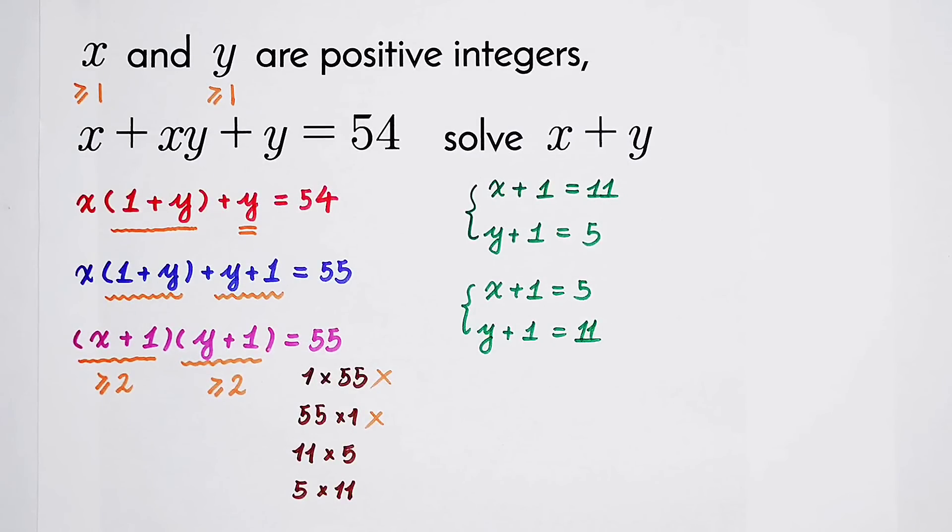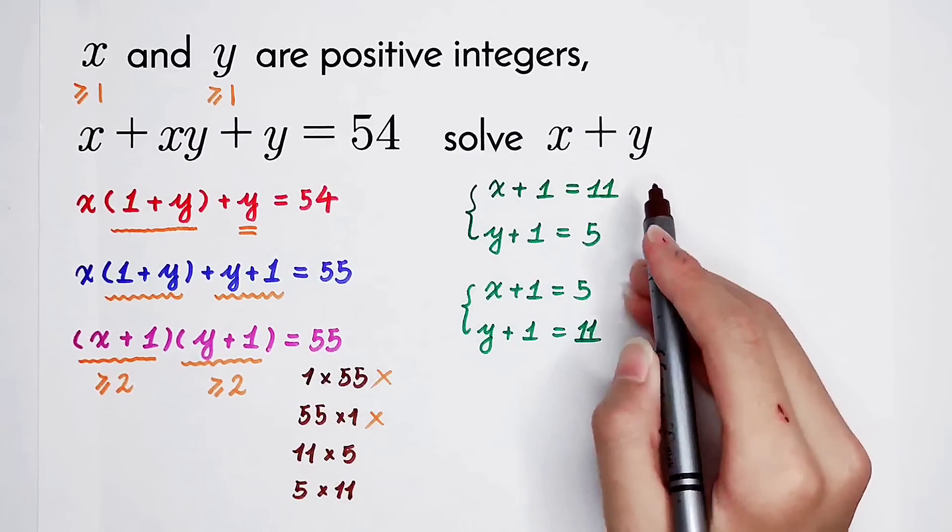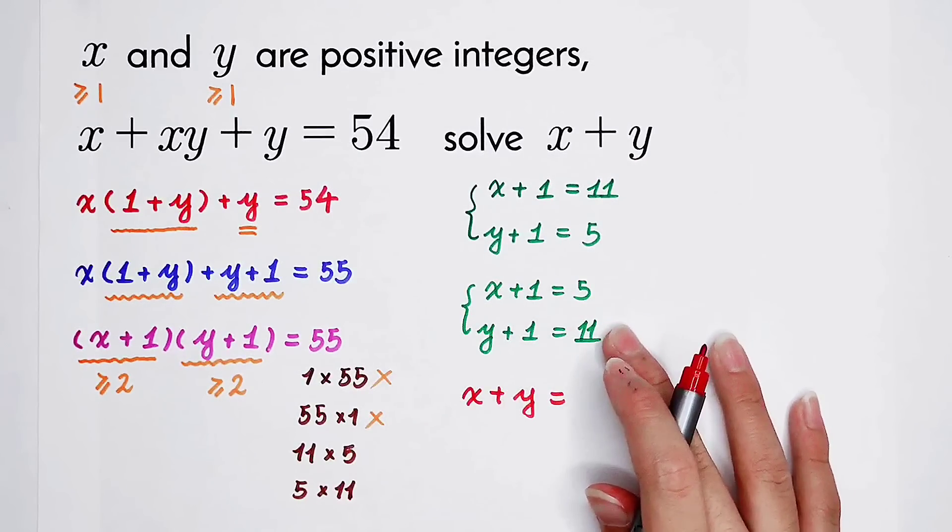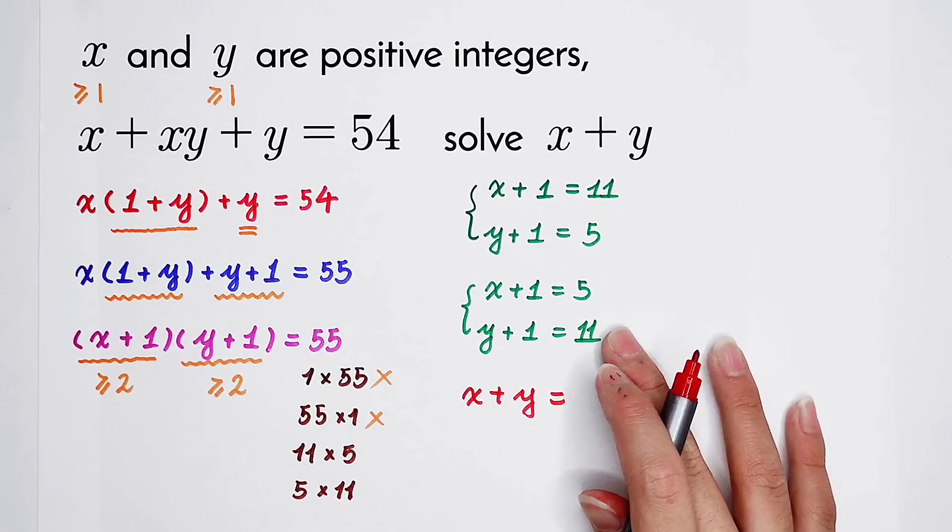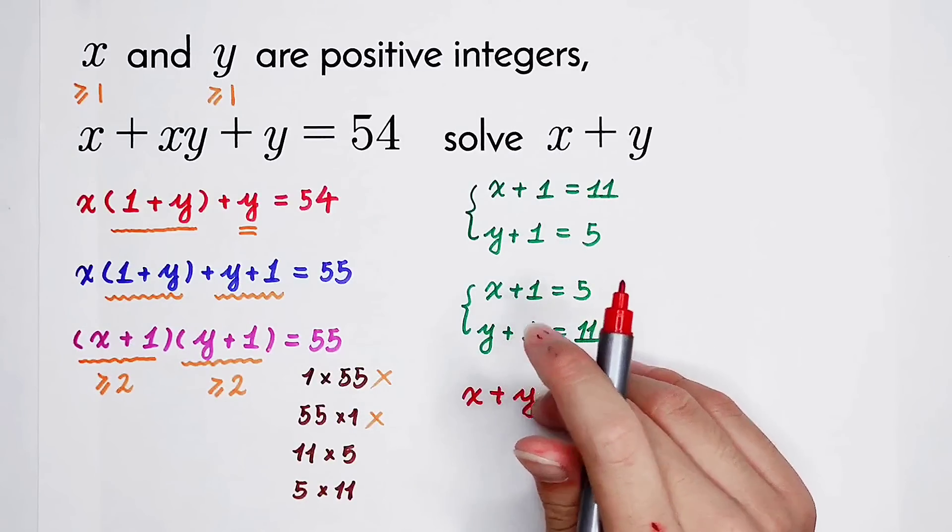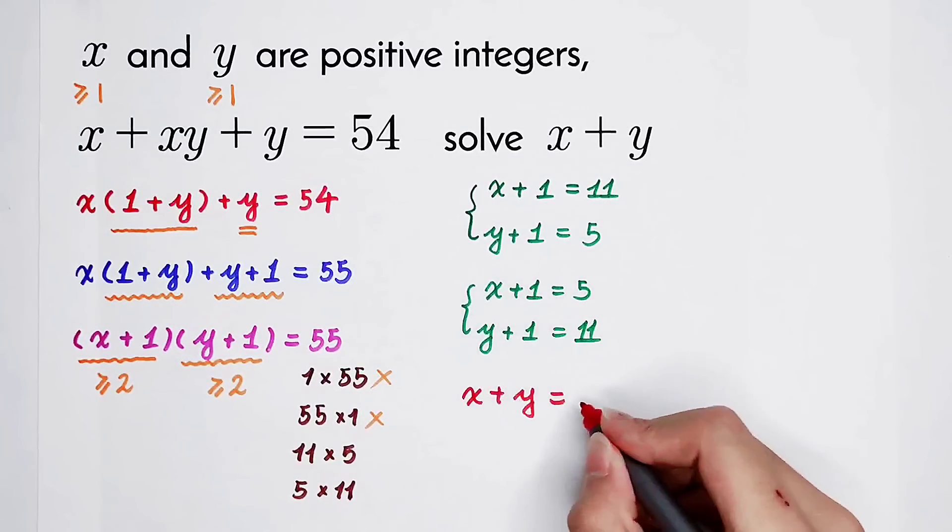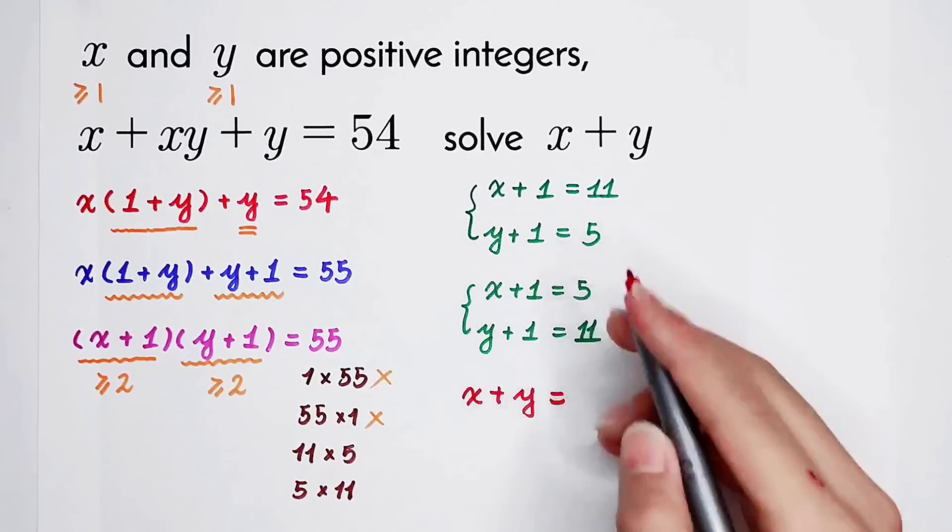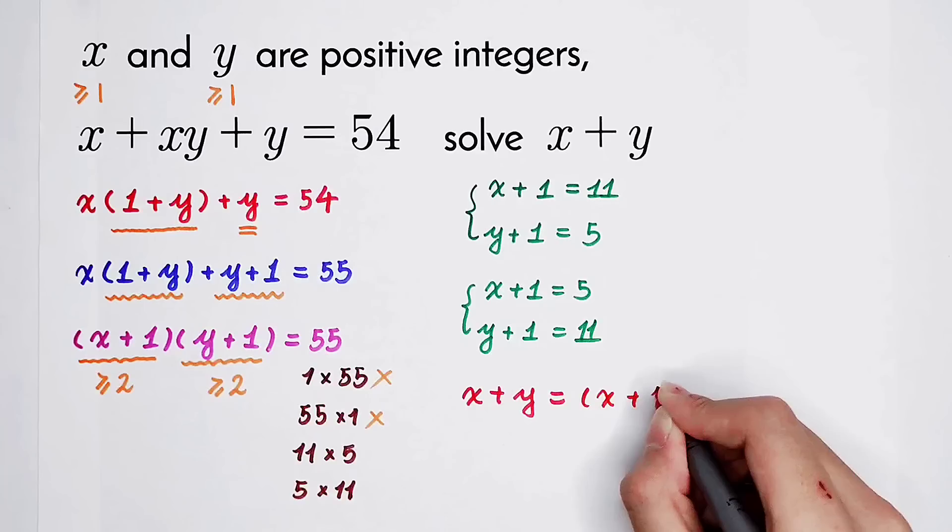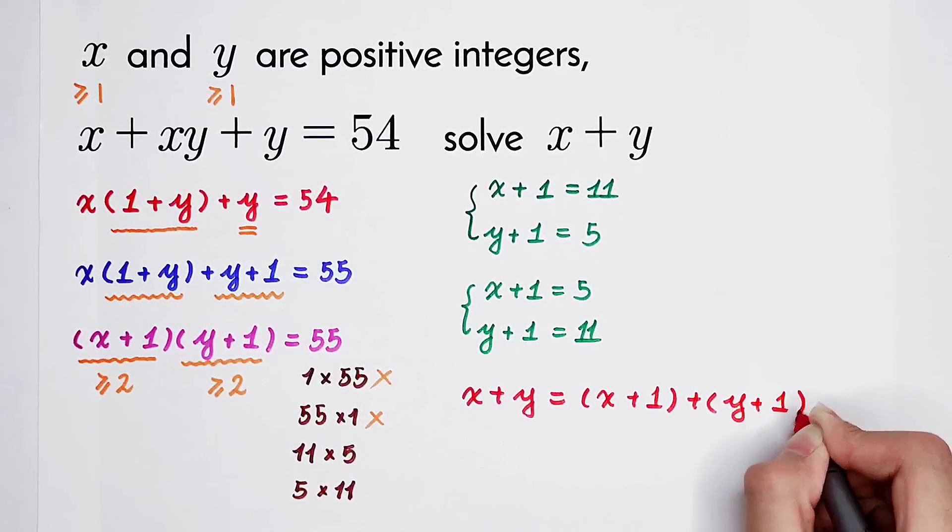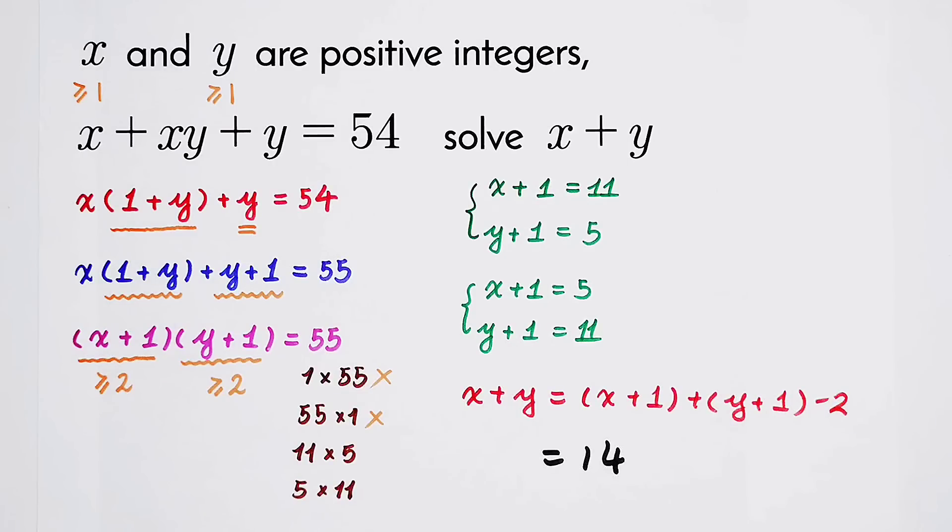From these two cases we can get the value of x plus y. We can solve x from these two cases, but I think we don't have to do it. There are two cases and we have to solve x and y. Now I have one way: x plus y, we know the value of x plus 1 and y plus 1, so it can be written as x plus 1 plus y plus 1 minus 2. Did you get it?